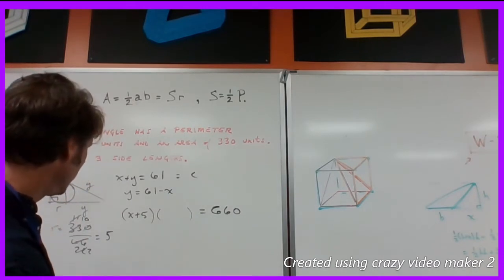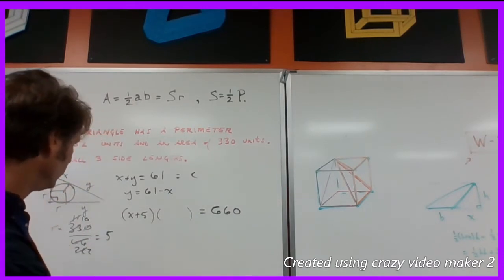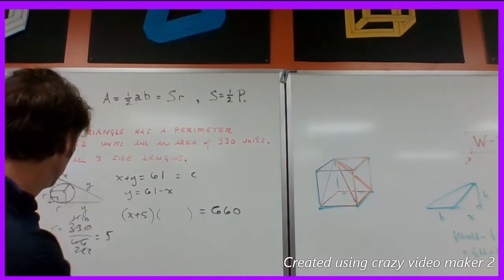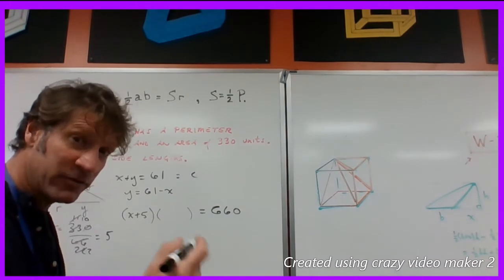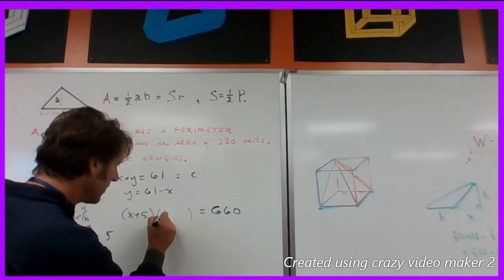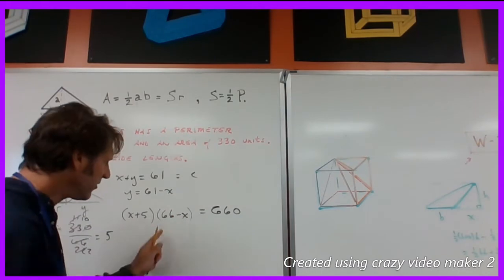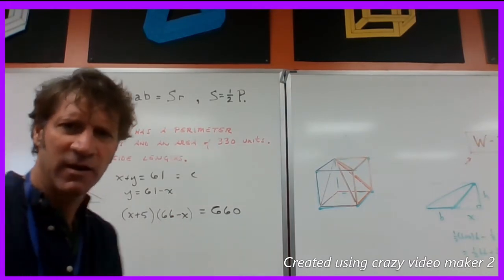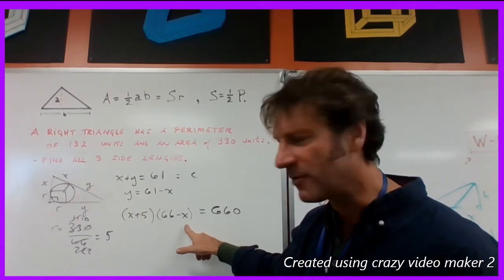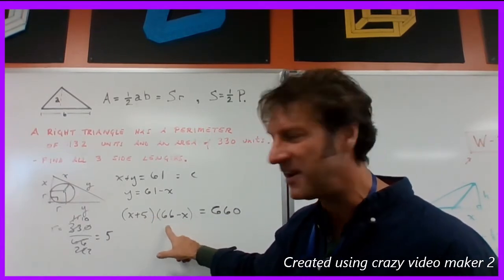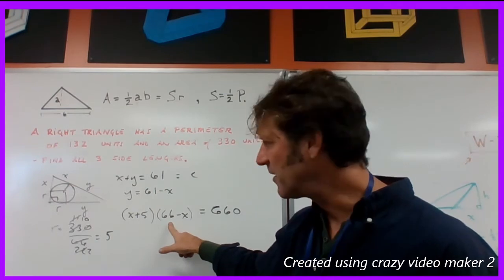So now we've got times y plus 5 which is 61 minus x plus 5 which is 66 minus x. So make sure you understand where this came from. That was a little bit quick. Do that work right there. 66 is going to be kind of important. Now here we got this 5 and the 66 happening again. Those are going to multiply to a 330. All right.